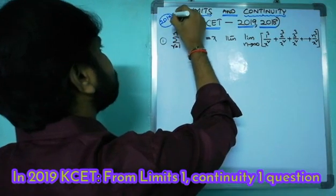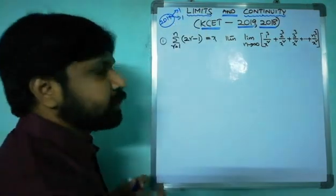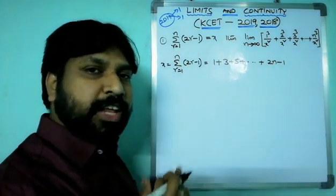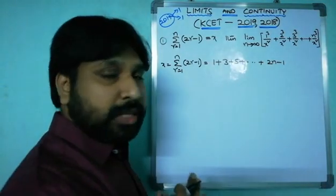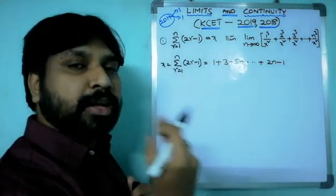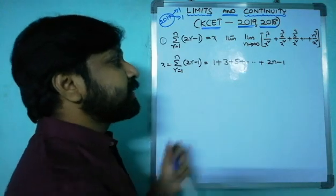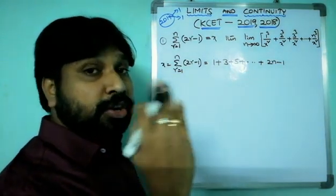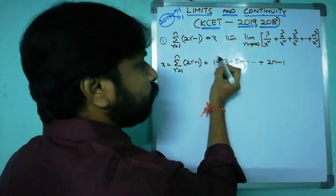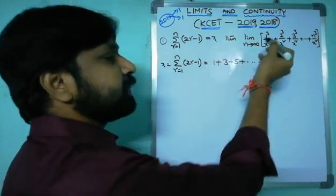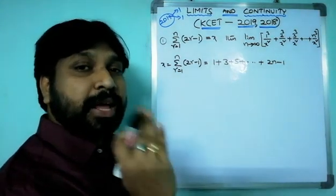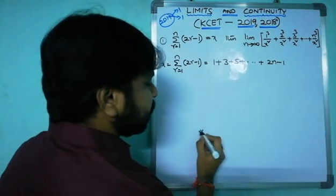The first 2019 question: x equals 1 + 3 + 5 + ... + (2n-1). This is the sum of all these terms. Total number of terms is n, since r runs from 1 to n. To apply the sum of n terms, check whether it is AP, GP, or HP. The common difference t2 - t1 = 3 - 1 = 2, and 5 - 3 = 2, so the common difference is the same — this is an AP.